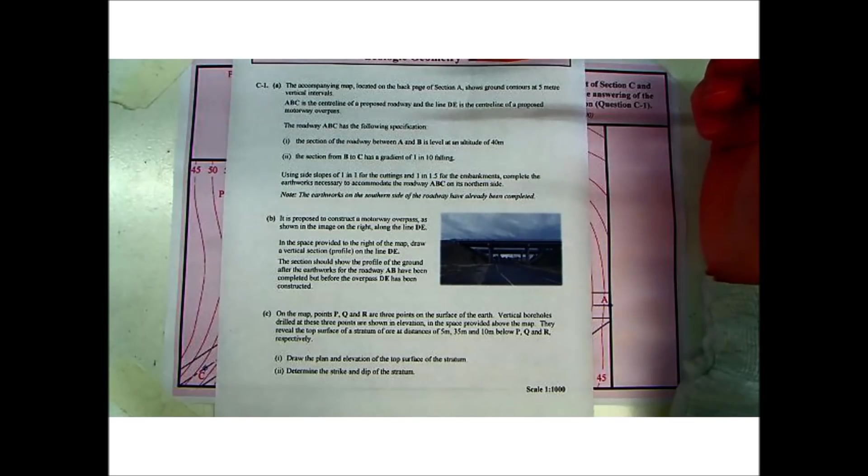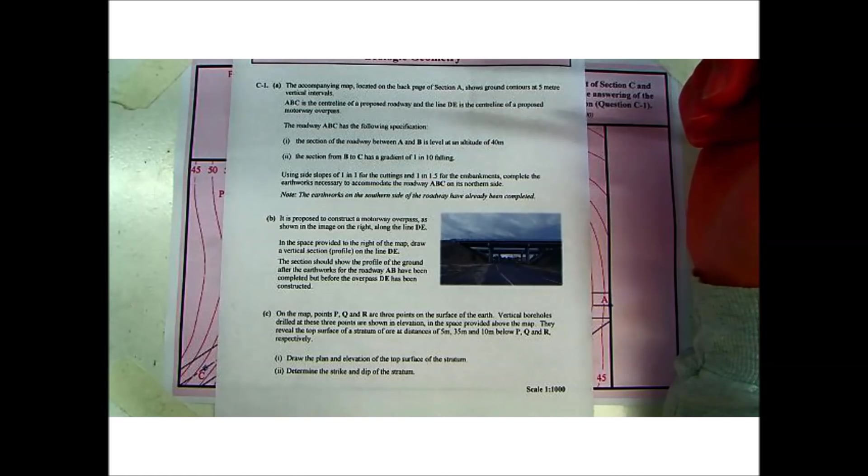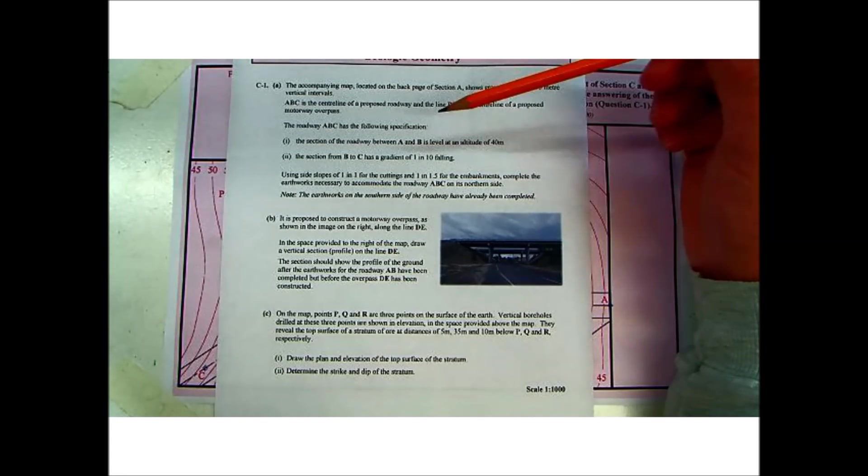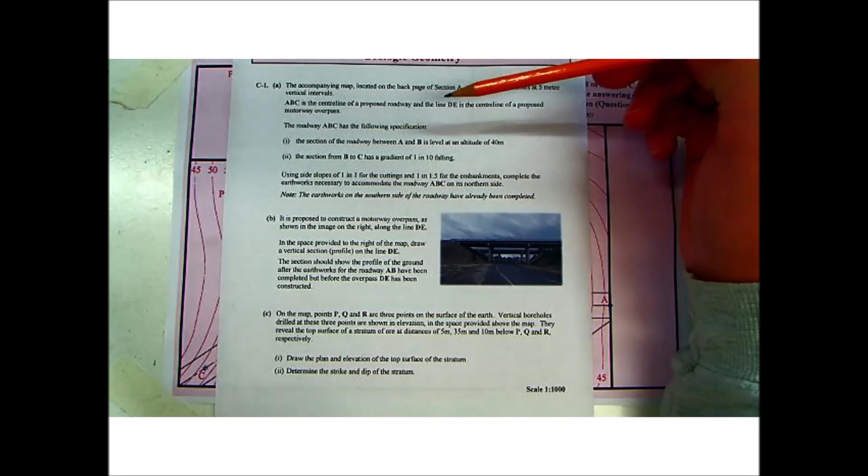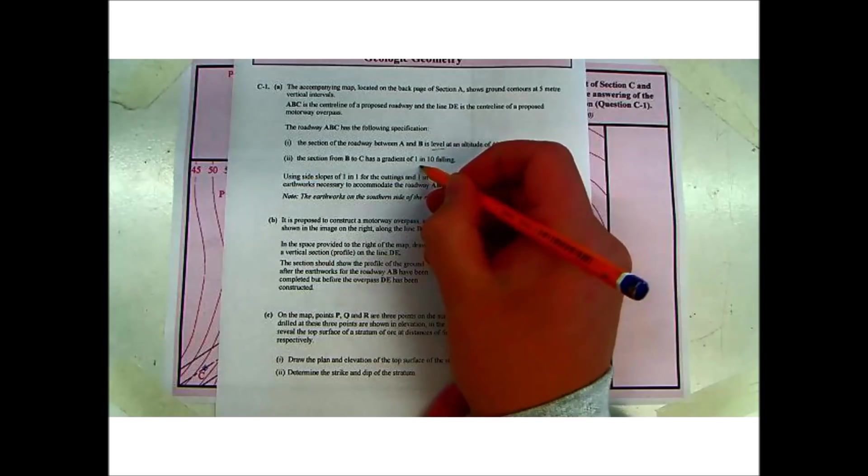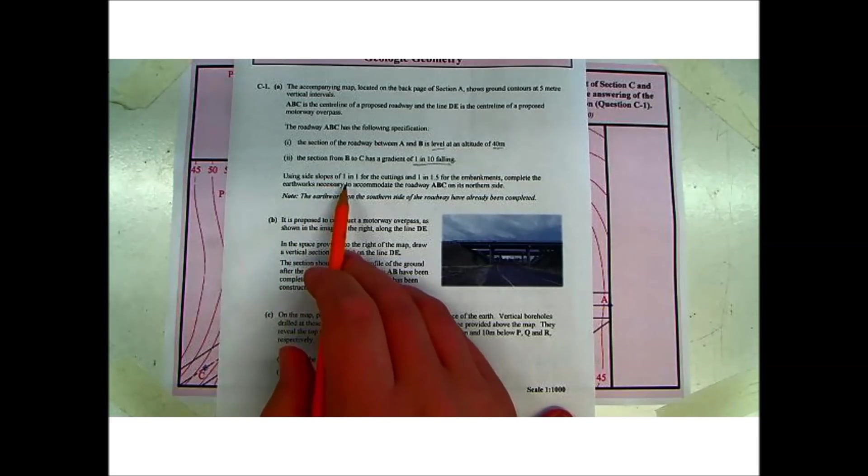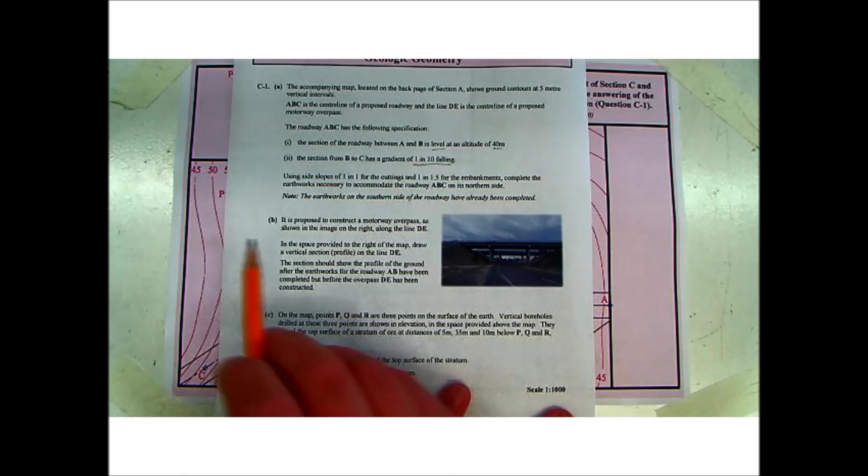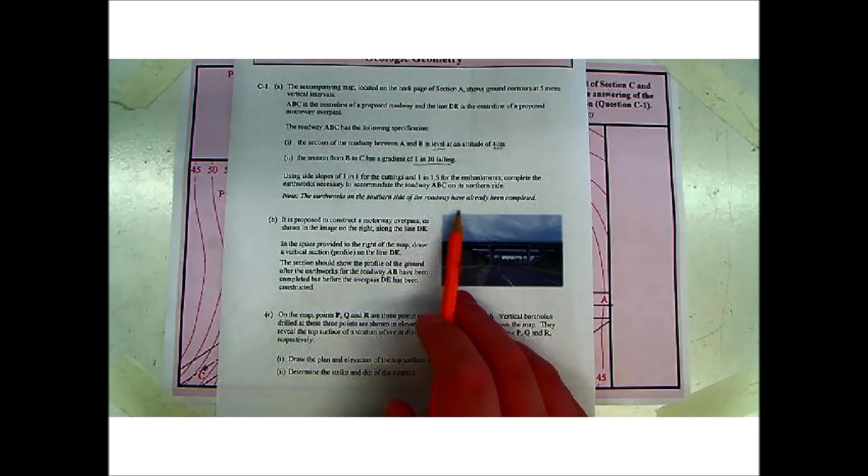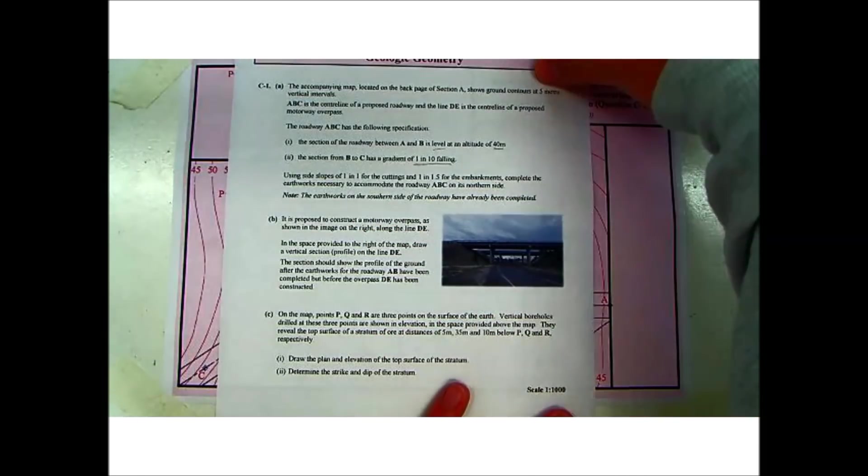Today we're going to do another Geolot Geometry question from the 2013 paper, question C1. We'll read through it. The accompanying map shows ground contours at 5m vertical intervals. ABC is the central line of proposed roadway and line DE is the central line of proposed motorway overpass. The section of roadway between A and B is level at an altitude of 40m. The section from B to C has a gradient of 1x10 falling. Using side slopes of 1x2 for the cuttings and 1x1.5 for the embankments, complete the earthworks necessary to accommodate the roadway ABC on the northern side. I might do part A in one question and B and C in another video, so we'll just focus on part A for the time being.